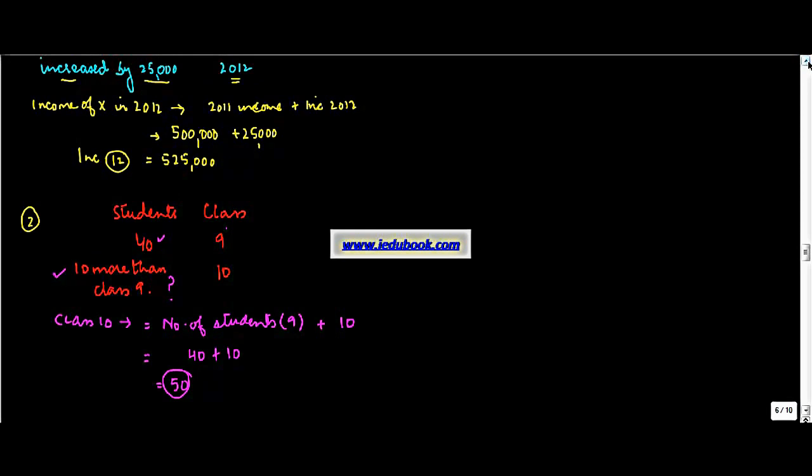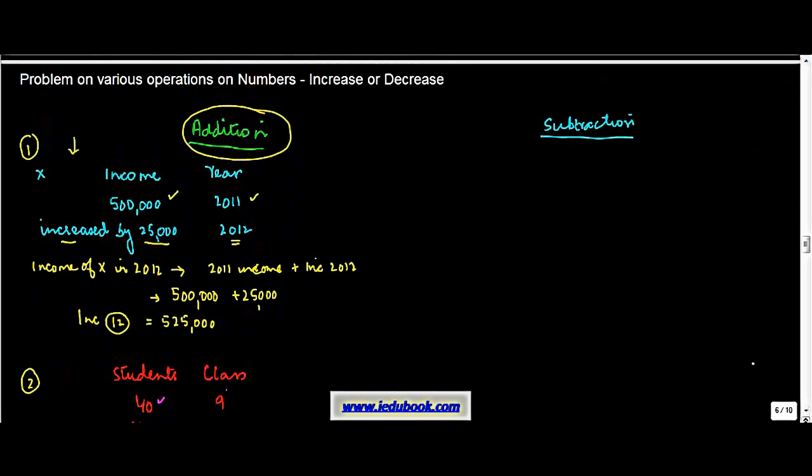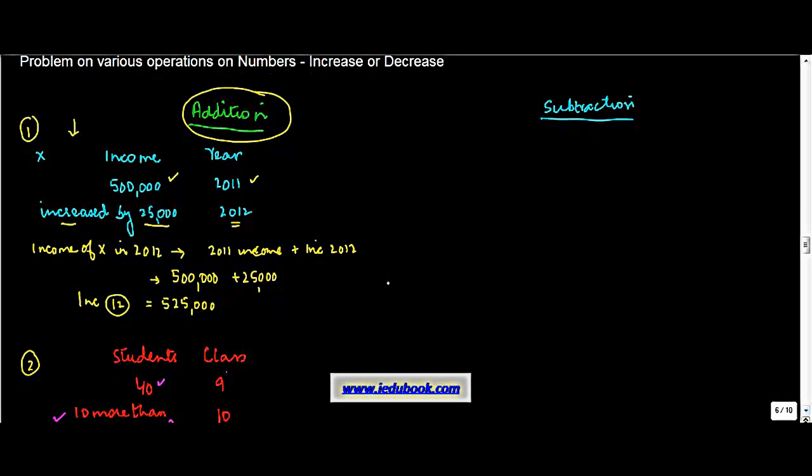So we have applied the operation of addition on a given problem to get the answer. Now let us say you have a similar case here. Let us say you have the year 2011, 2012. The income is 500,000 and here you are told that it decreased by 25,000.